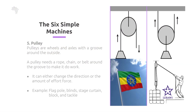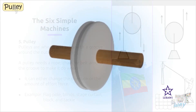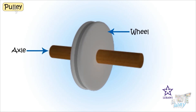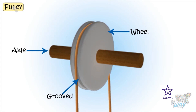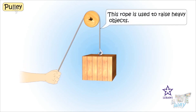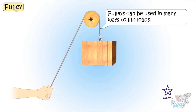The fifth type of simple machine is pulley. Pulleys are wheels and axles with a groove around the outside. A pulley needs a rope, chain, or belt around the groove to make it work. It can either change the direction or the amount of effort force. Examples include flagpoles, blinds, stage curtains, and block and tackle pulley systems.